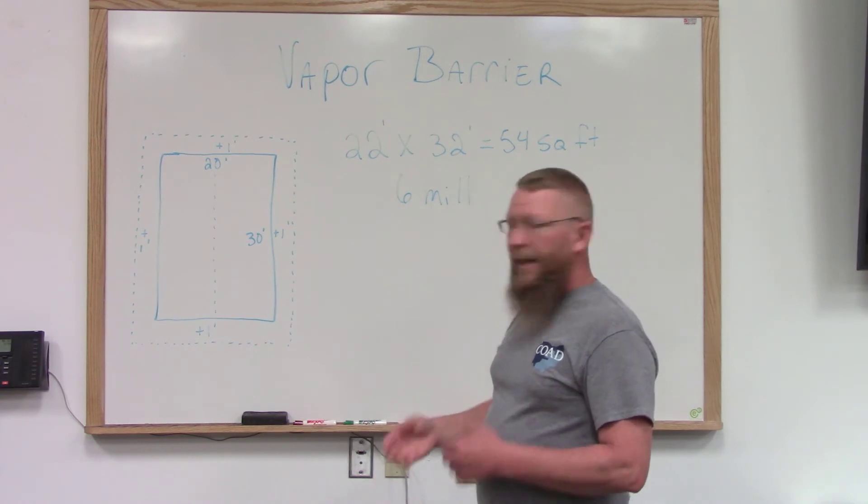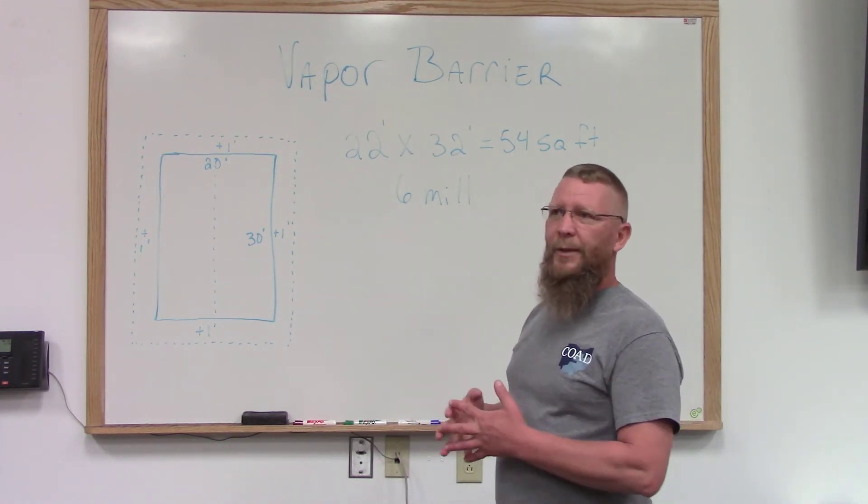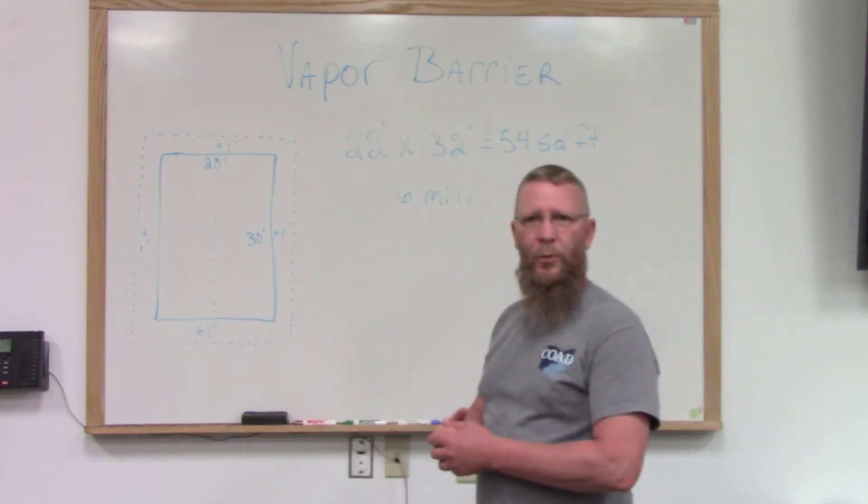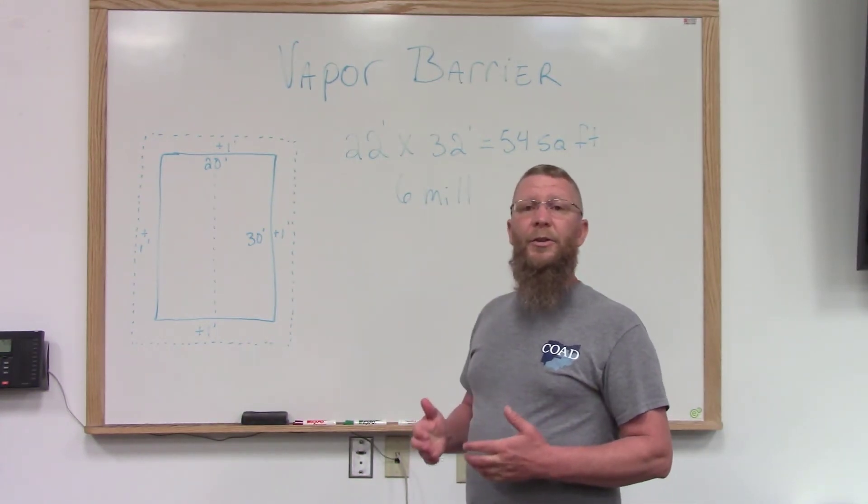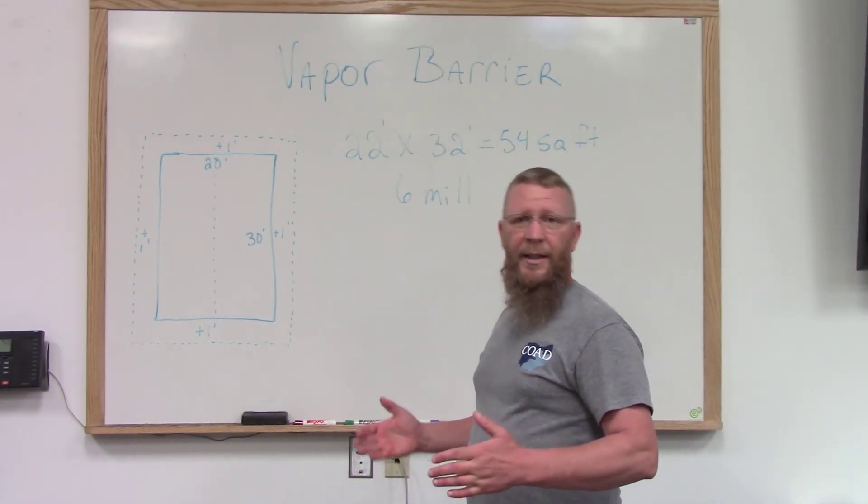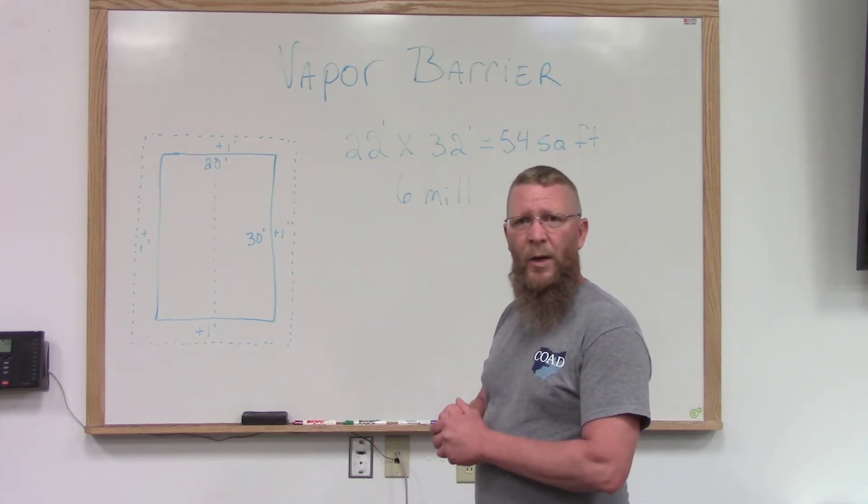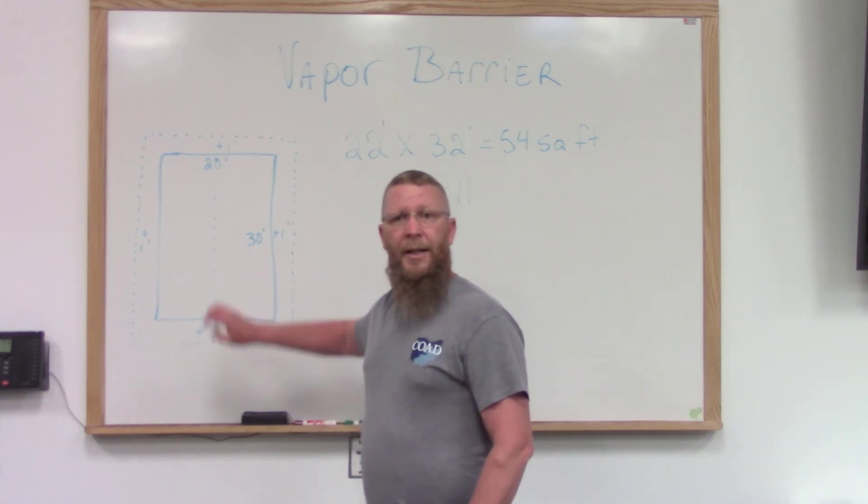But there's one thing, and it has to be six mil plastic, but there's one thing that we often forget about. Well, plastic sometimes is only 10 foot wide. We do have our limitations on there. So if you run into a situation where your plastic isn't wide enough to cover the whole area of the crawl space width, you're going to have to overlap it. That's why I drew this little dotted line here.